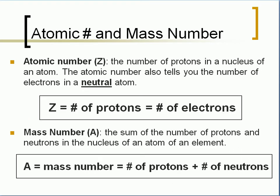Atomic number, represented by the letter Z, basically tells you the number of protons and the number of electrons in a neutral atom. So Z equals the number of protons, also equals the number of electrons. When an atom is not neutral, it's going to be different.